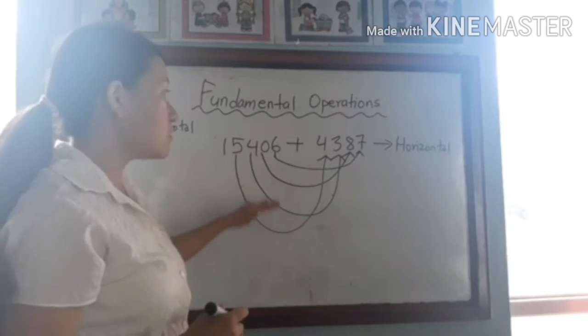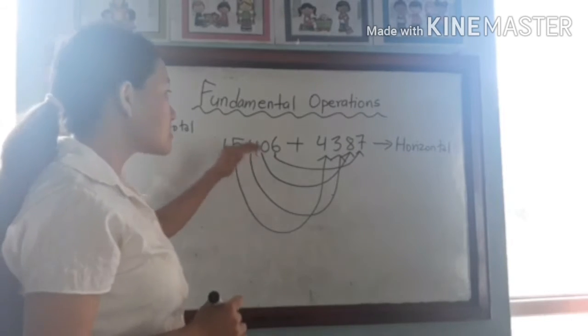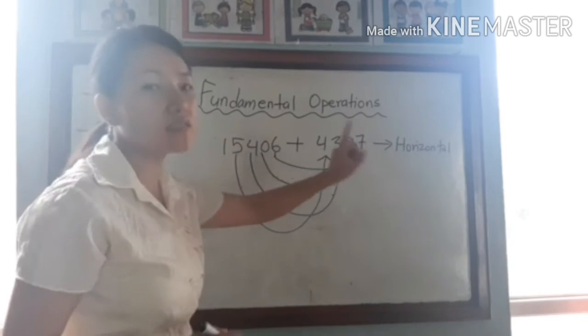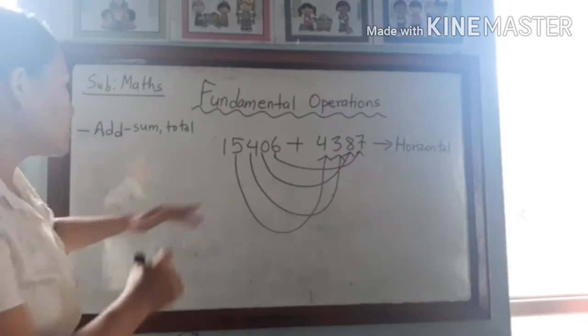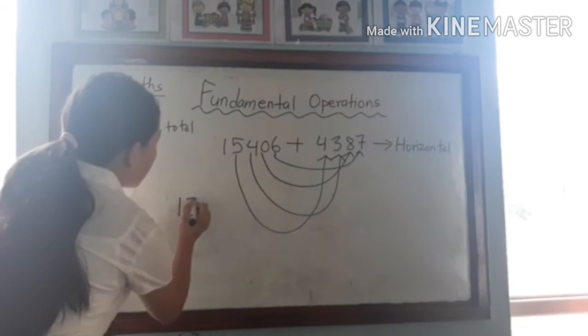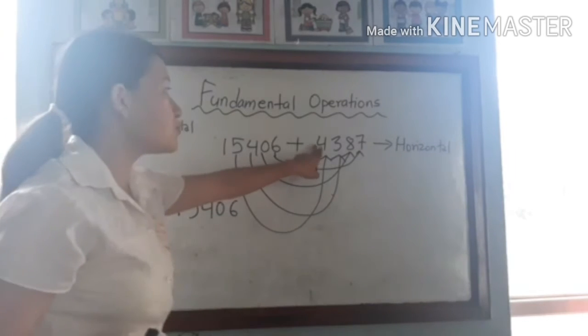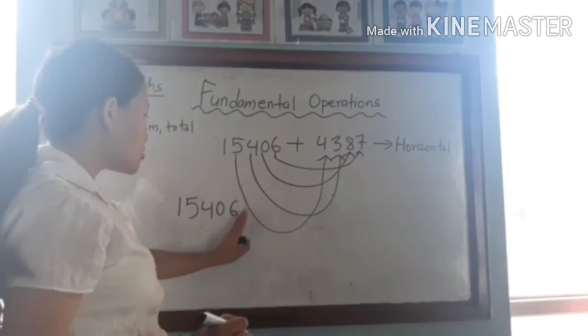If we are arranging in vertical order, then it will be like this. 15406. Now we have to put this number according to the place value.